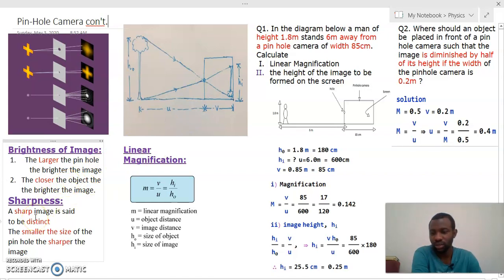Let's look at sharpness. When we say an image is sharp, what do we mean? We mean the image is distinct or it is clear enough. The factor is that the smaller the size of the pinhole, the sharper the image.